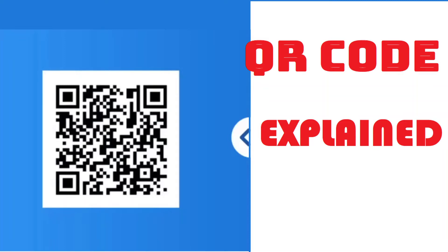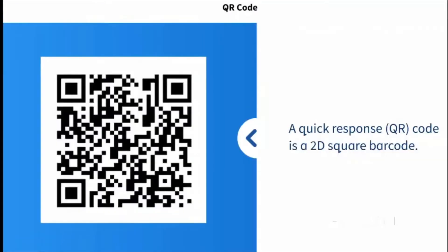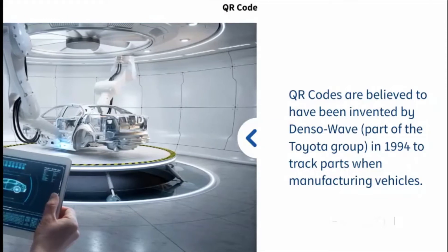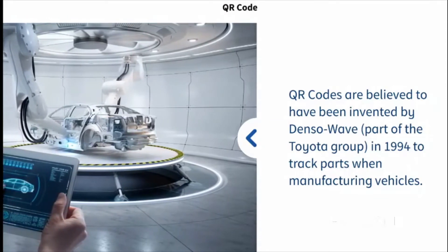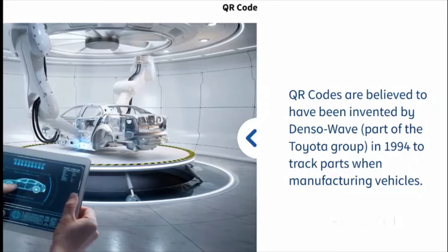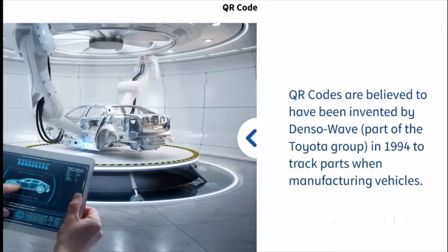A quick response, or QR code, is a 2D square barcode. QR code was invented by Denso Wave, part of the Toyota Group in 1994, to track parts when manufacturing vehicles.